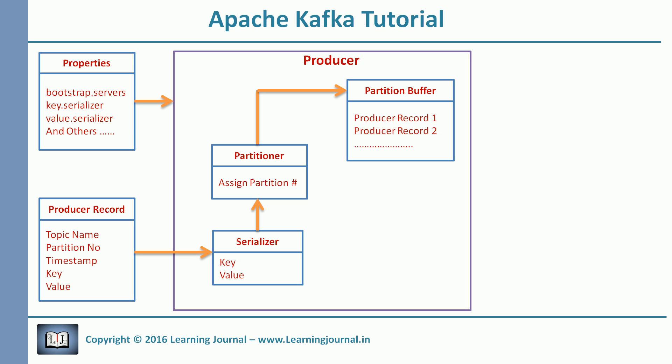The producer maintains in-memory buffers for each partition and sends records in batches. You might be wondering what is the size of the batch and how much time the producer will linger waiting for more messages to arrive. We can configure all of these things by adding appropriate configuration parameters to the properties object that we used to instantiate the producer. Finally, the producer will send the batch of records to the broker.